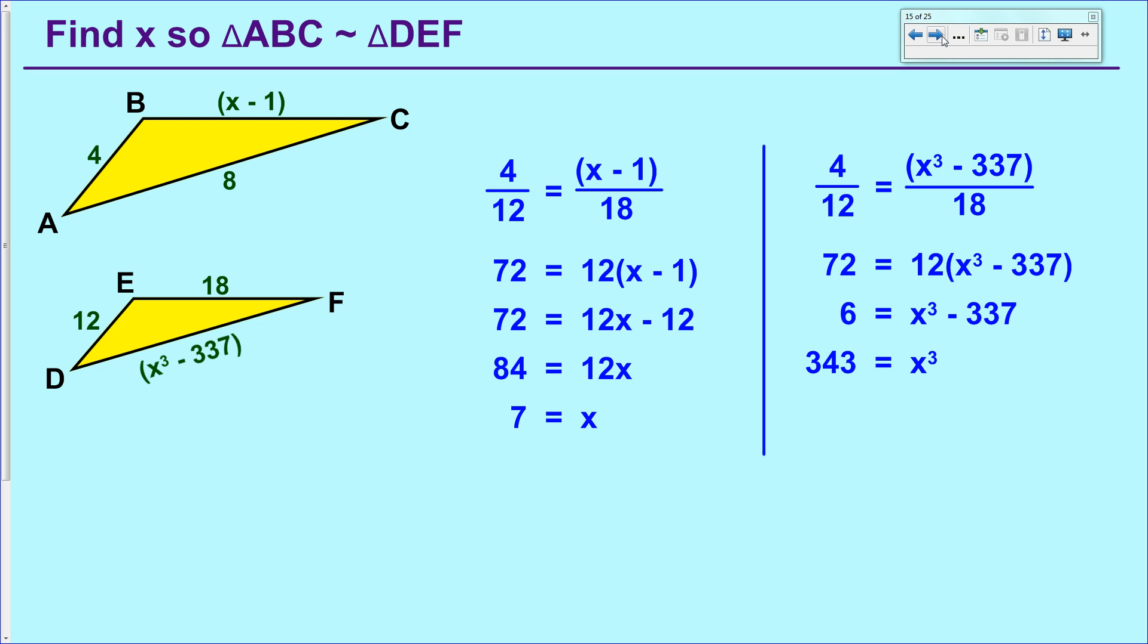And a lot of calculators have a cube root button. If they don't, they have an x root or an nth root button, where you would type in 3, that button, and then 343. And if you do that correctly, by taking the cube root of each side, you'll get x equals 7 again. And it still works.